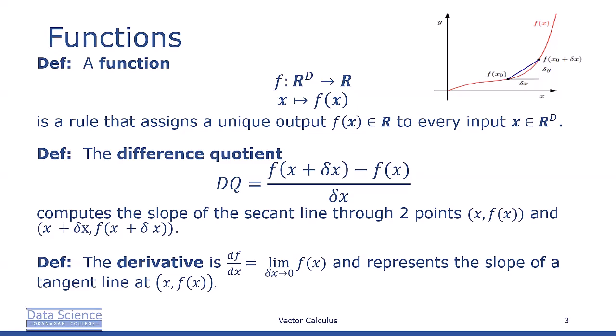We can see an image of this in the figure top right corner. The difference quotient can also be considered the average slope of f between x and x + δx, if we assume x to be linear.